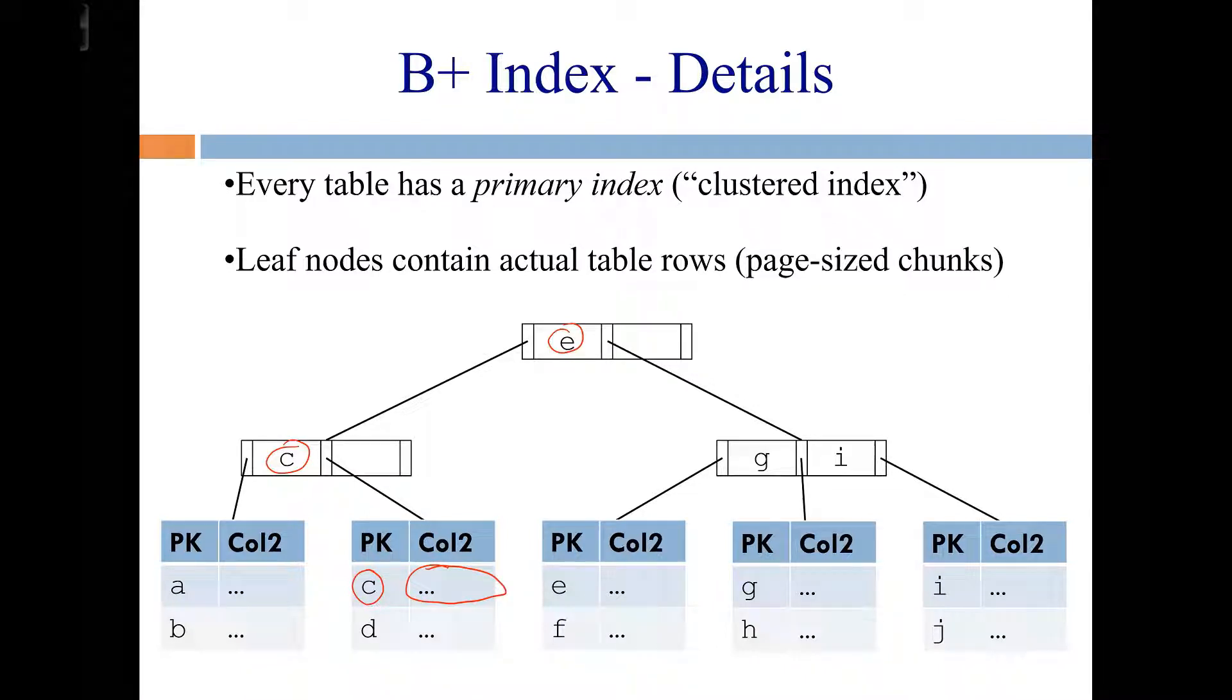In this example, my table would only have two columns. So whatever the primary key column is, plus this column two. That could be a date or a string or anything. The entire table data is stored in the leaf nodes of this primary index.